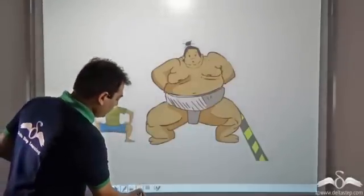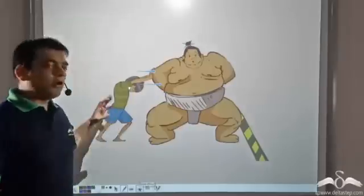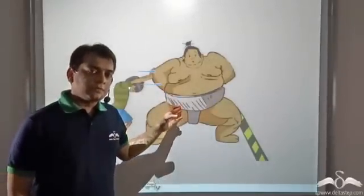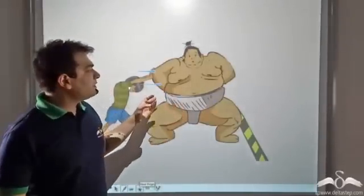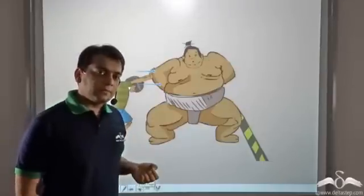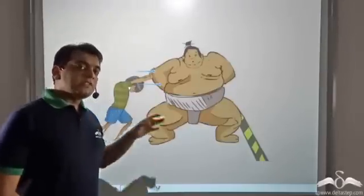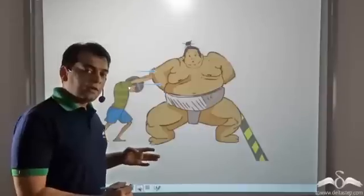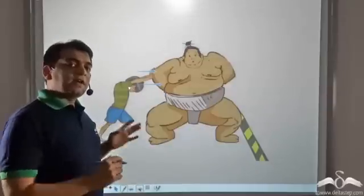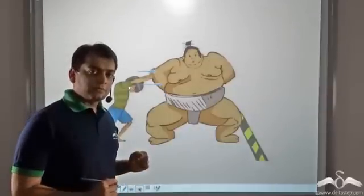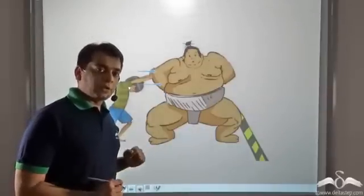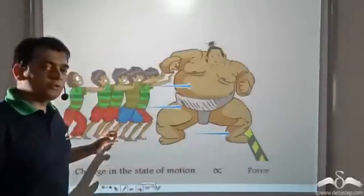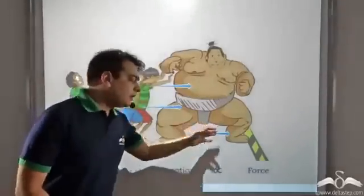This small boy uses all his might to push the sumo wrestler, but he is not even able to move the sumo wrestler a tiny bit. Now seeing this, a few of his friends come to the arena and they start pushing the sumo wrestler. And guess what? With all their might together, they are able to move the sumo wrestler a little bit.